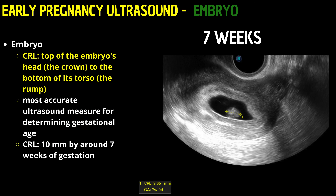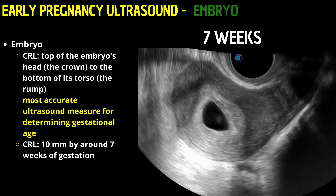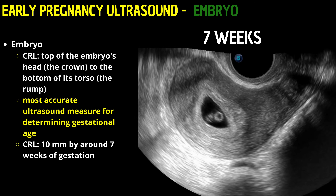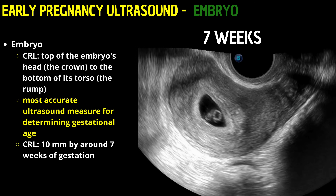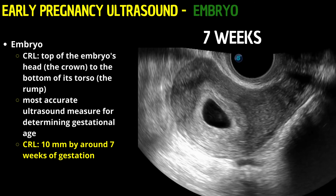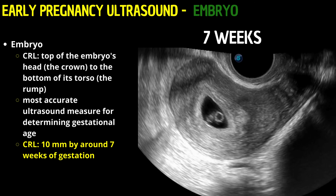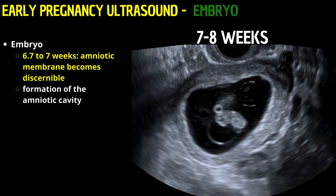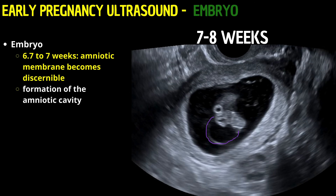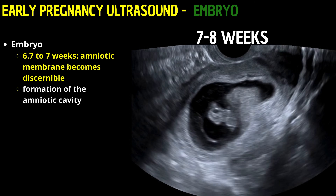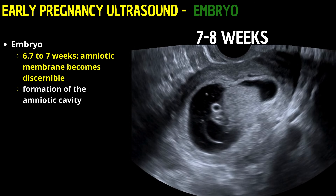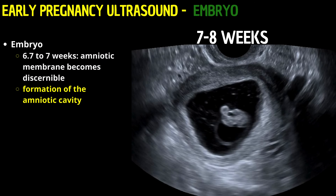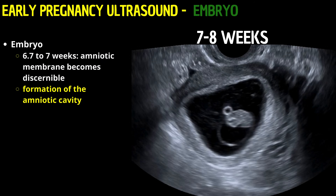The CRL, which measures the distance from the top of the embryo's head — the crown — to the bottom of its torso — the rump — is the most accurate ultrasound measure for determining gestational age in the first trimester. As the embryo develops, the CRL is expected to increase, reaching approximately 10 millimeters by around 7 weeks of gestation. By 6.7 to 7 weeks, the amniotic membrane becomes discernible, encapsulating the embryo in a protective fluid-filled sac. This membrane's visibility marks an essential stage in the formation of the amniotic cavity, which plays a crucial role in the embryo's continued growth and protection.